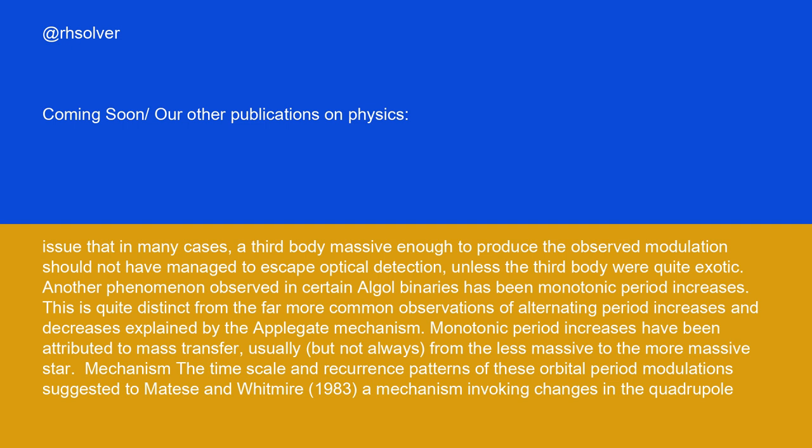Another phenomenon observed in certain Algol binaries has been monotonic period increases. This is quite distinct from the far more common observations of alternating period increases and decreases explained by the Applegate mechanism. Monotonic period increases have been attributed to mass transfer, usually but not always, from the less massive to the more massive star.